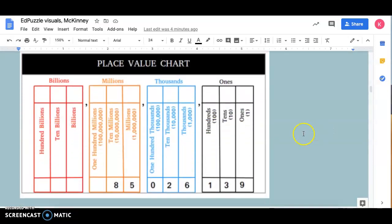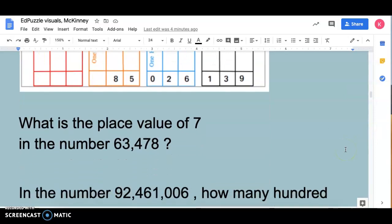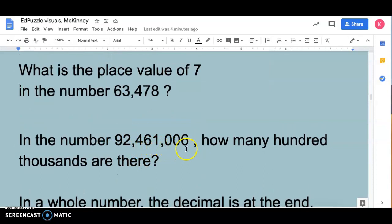So then a quick review of place value. Here we have 85,026,139. And you can see we have the ones place, tens place, hundreds place. Your decimal would be right here. To the left of the comma we have thousands, tens and hundreds, tens, millions, tens and so forth. What is the place value of the number 7 in 63,478? In the number 92,461,006, how many hundred thousands are there?